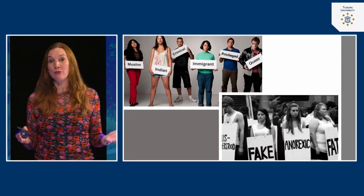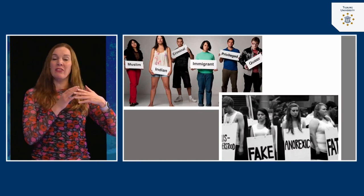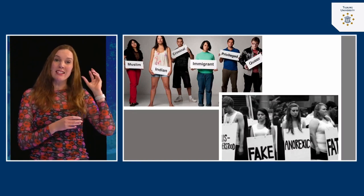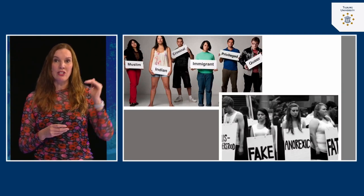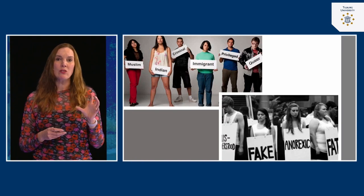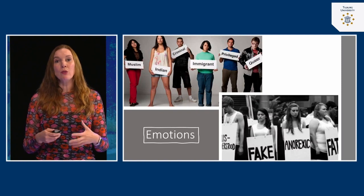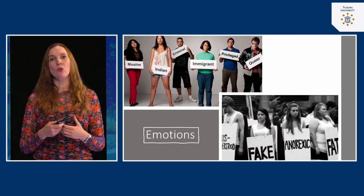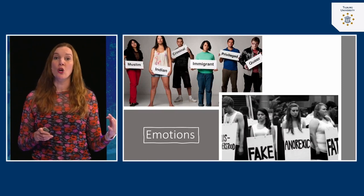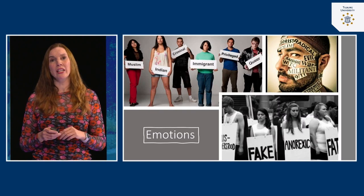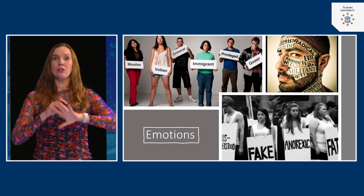We have processes of belief perseverance — the perseverance effect — showing that even if information is later found to be incorrect, these ideas still linger. So stereotypes are very persistent. One reason they are so persistent is because they often entail a lot of emotions. People feel very strongly about members of certain groups — not all groups, but certain groups evoke very strong emotions.